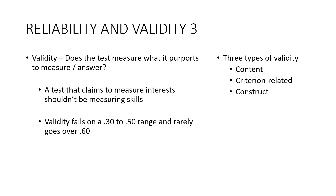Validity refers to whether the test measures what it claims to measure. A test claiming to measure interest shouldn't be measuring skills. For example, a test labeled as measuring depression but filled with anxiety questions lacks validity. Validity falls in a 0.30 to 0.50 range and rarely exceeds 0.60 — if you're reading a journal or manual and see scores in that range, it's considered typically acceptable. There are three types: content, criterion-related, and construct validity.